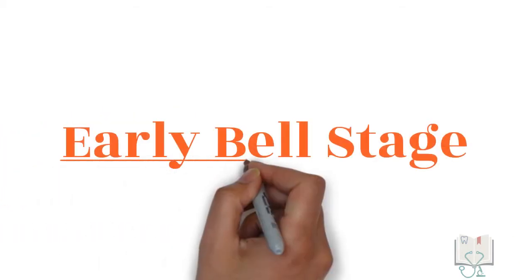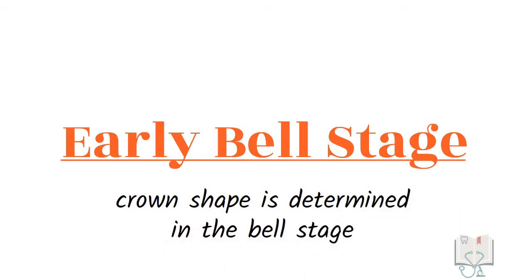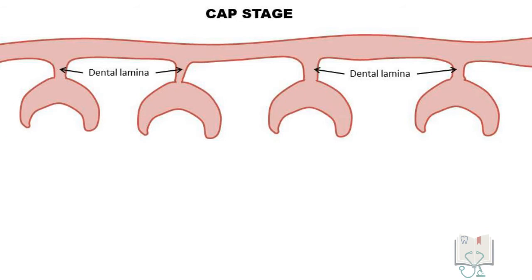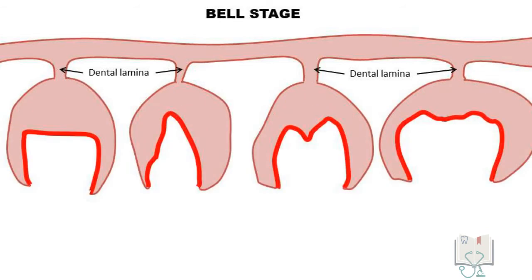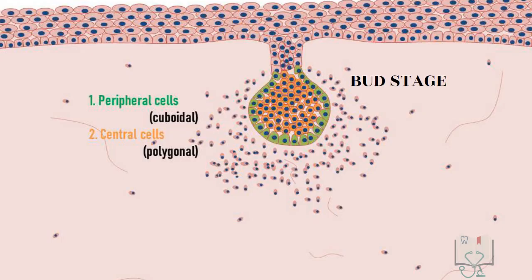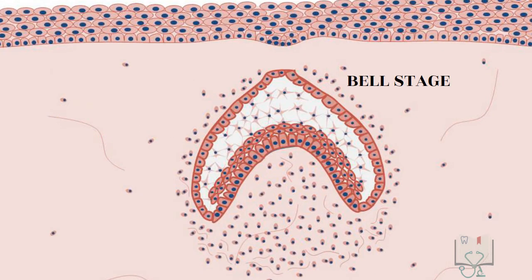In the early bell stage, the crown shape of the tooth is determined. The concave surface, or the inner enamel epithelium of the enamel organ, takes the shape of the crown of the tooth to be formed. In the bud stage, two types of cells are seen in the enamel organ. Then with histo-differentiation in cap stage, three types of cells are seen, which increases to four types of cells in the bell stage.